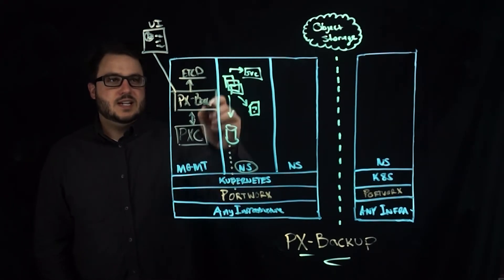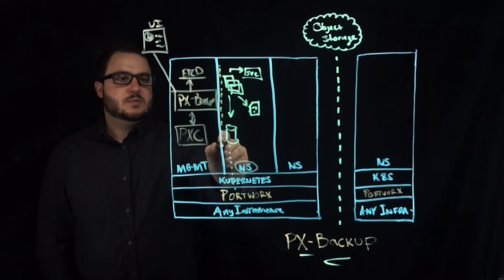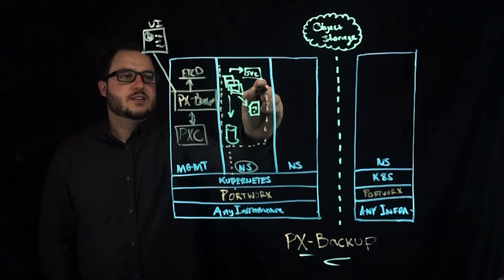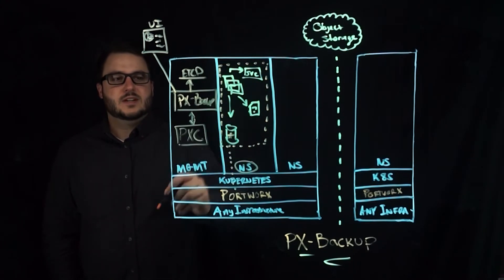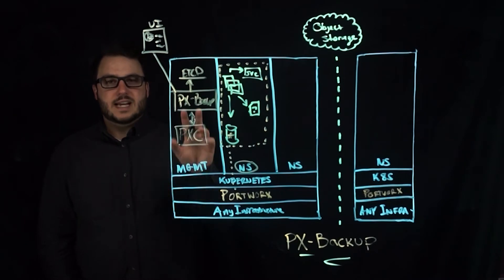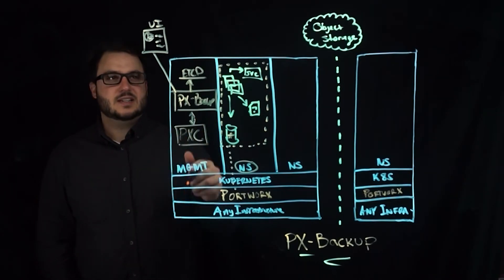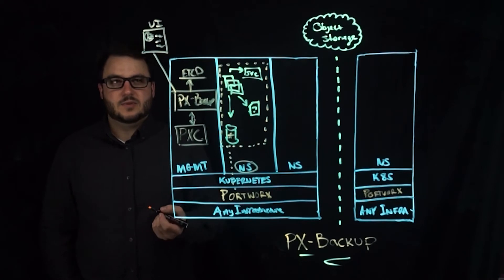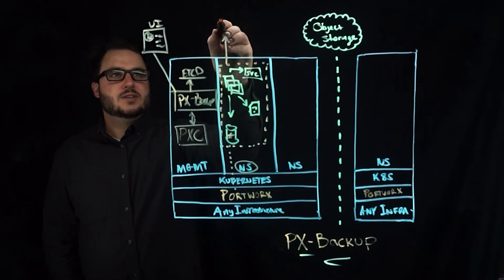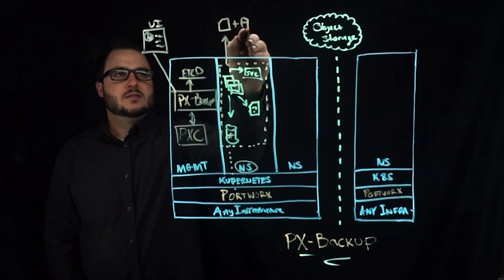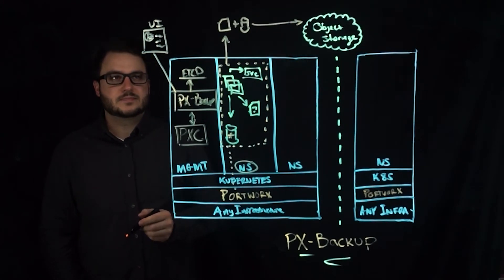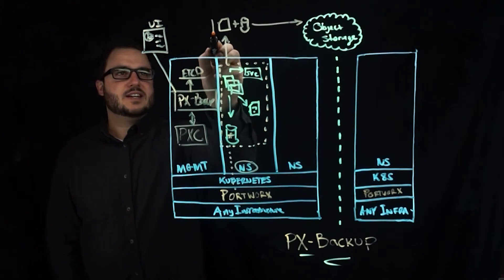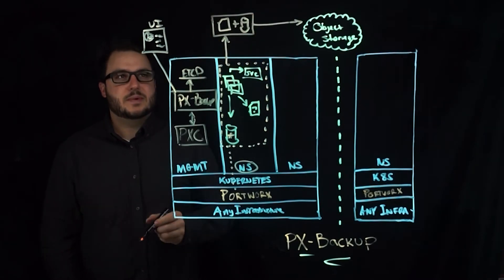The other way is to take an application view, which is what we're going to talk about here and gather essentially all the objects and the data that are part of the application, which is basically an application plus data or backup. So when you take that backup, you're gathering the location plus the data and shipping it off to object storage. And that entire thing is then treated as your backup.